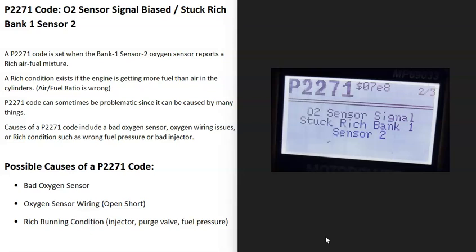Today I'm talking about a P2271 code, what it is and how you go about fixing it. A P2271 code is an O2 sensor signal stuck rich, bank one sensor two. What does this mean?